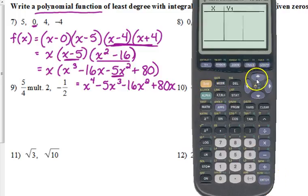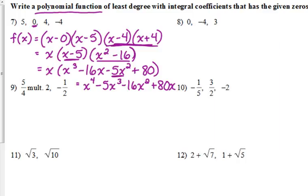You could also graph this or type it into your y equals and go to the table and make sure that of those four values, the y value is zero. So I typed it in, I'm going to my table. At zero, I get zero. At four, I get zero. At five, I get zero. And let me make sure negative four also gives me zero. And it does. So that means we wrote it correct.